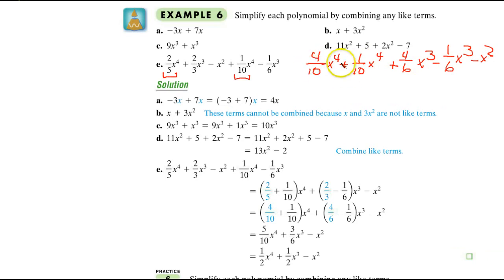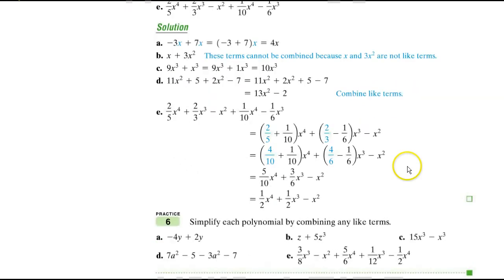I just add my numerators now, that my denominators are the same. This is 5 tenths, which is 1 half, x to the 4th. 4 minus 1 is 3, 3 sixths is also 1 half, x to the 3rd, minus x squared. And that's what they got. And they're showing you basically this technique. A little review of chapter 1 stuff here.